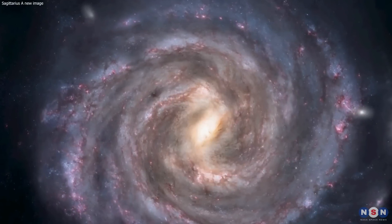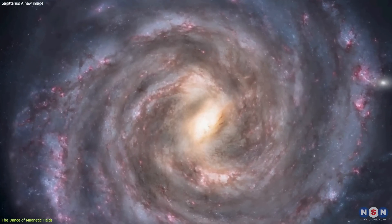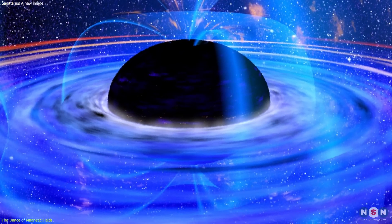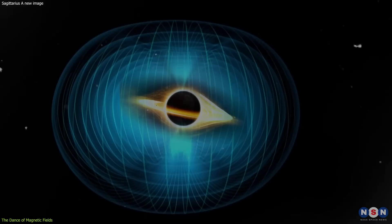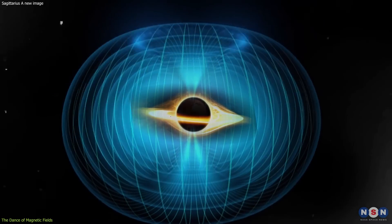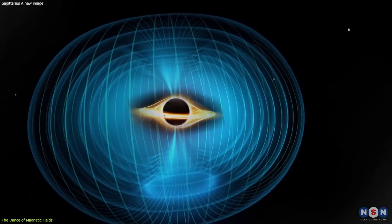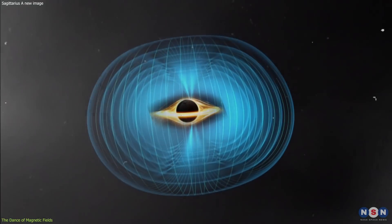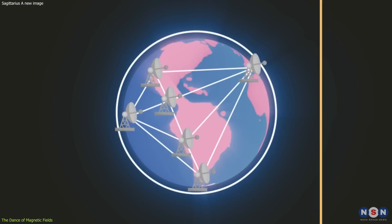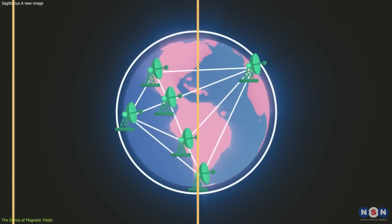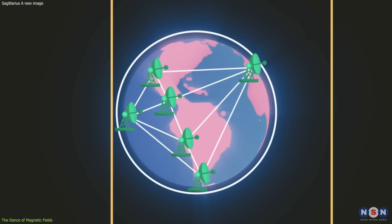The heart of our galaxy is a dynamic and tumultuous place, shaped by the invisible forces of magnetic fields. These fields are not mere spectators in the cosmic arena. They are active participants, influencing the behavior of matter and energy around the black hole. The Event Horizon Telescope's observations have provided a rare glimpse into this magnetic ballet.